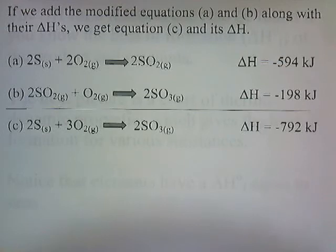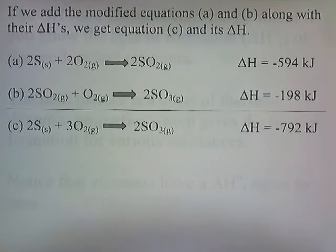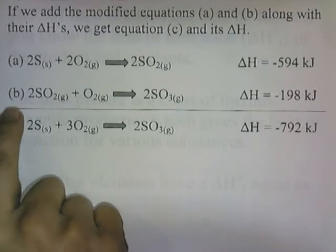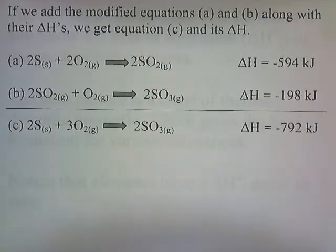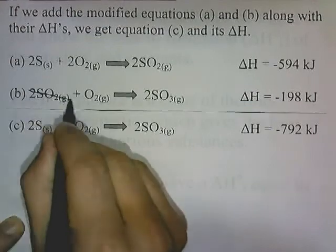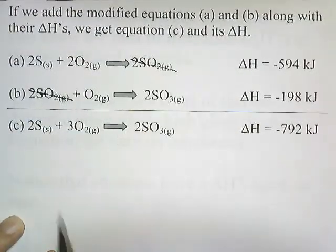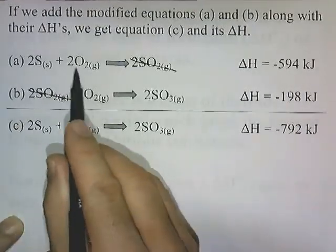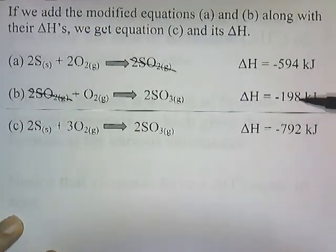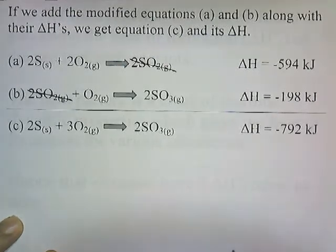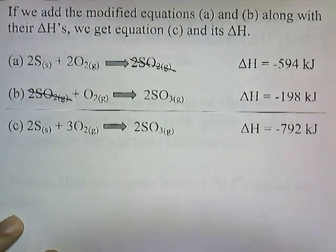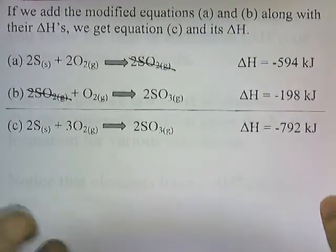Now if we add the modified equations A and B along with their delta H's, we get equation C and its delta H. Adding modified equation A (with 2S) and modified equation B (with 2SO3 on the other side), we see that 2SO2 on the right of one cancels 2SO2 on the left of the other. Bringing down 2S, 2O2 plus 1O2 gives 3O2, and 2SO3 comes down. Adding the delta H's gives negative 792 kilojoules, meaning sulfur and oxygen reacting to form SO3 releases 792 kilojoules of energy.